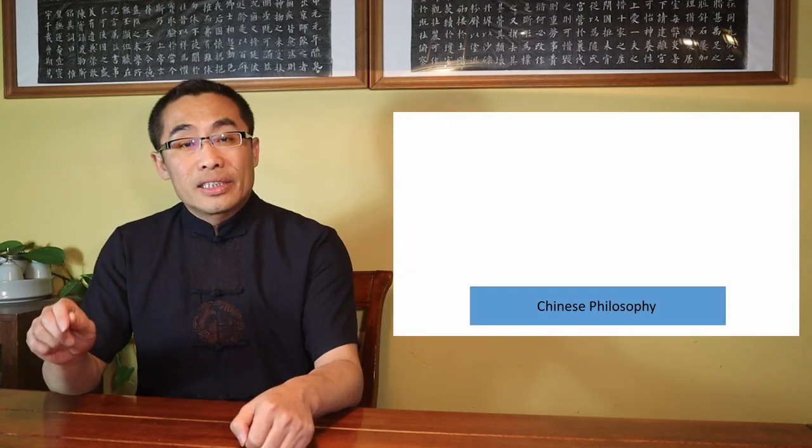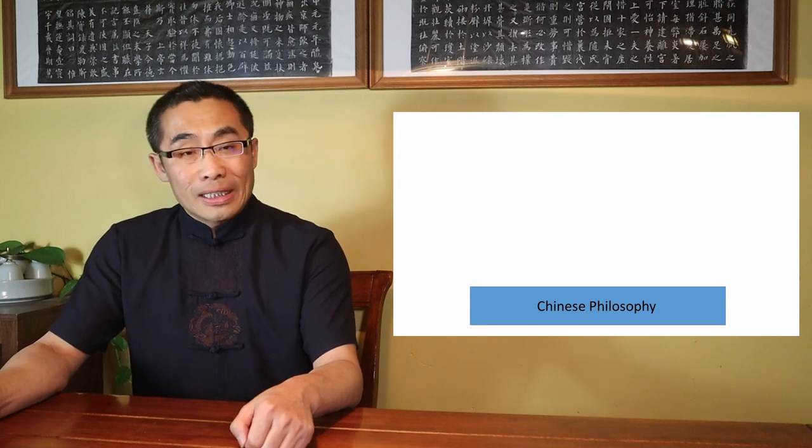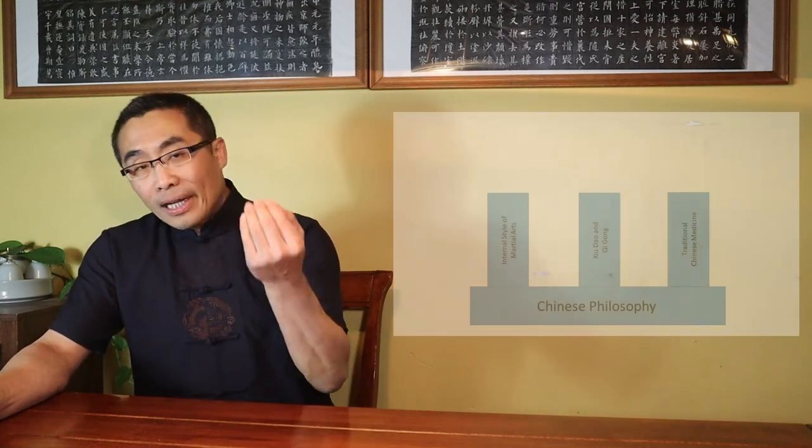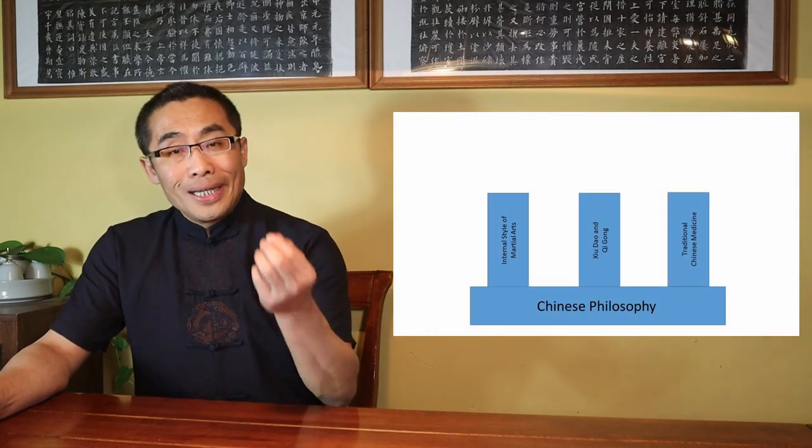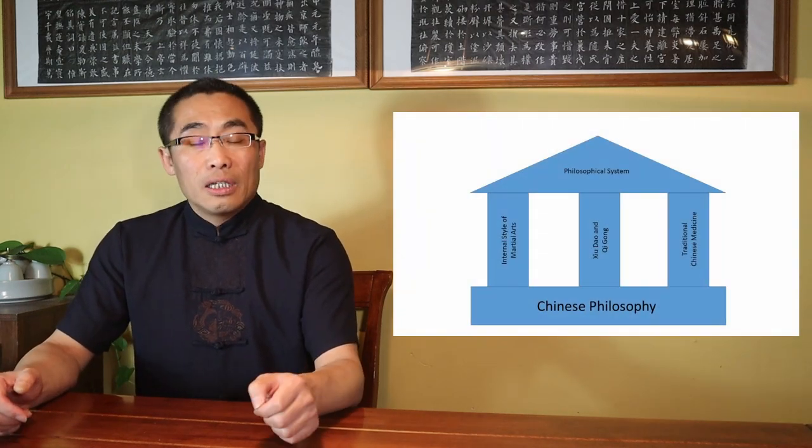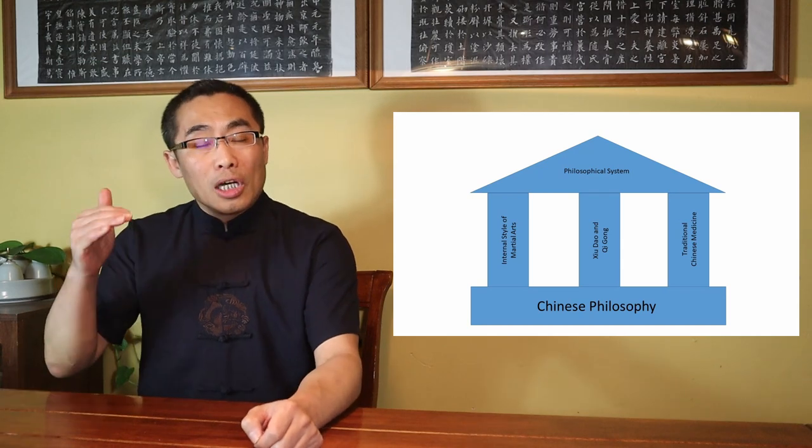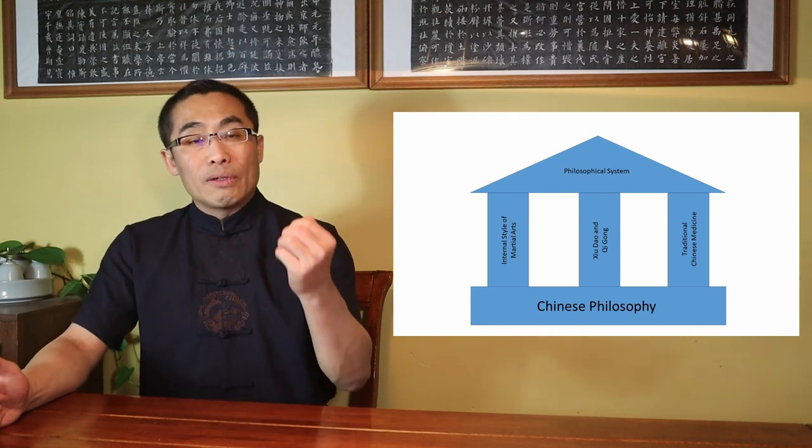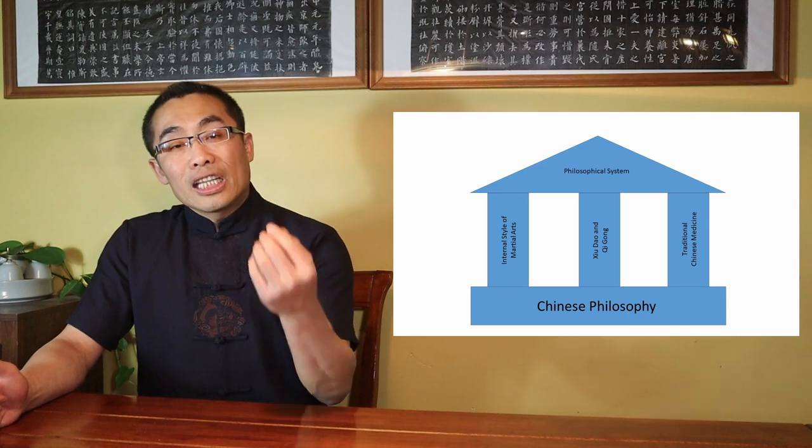The foundation level is the ancient Chinese philosophy system. The second level is the three-pillar system. Then, third or the top level is the philosophical system built upon the previous two levels.